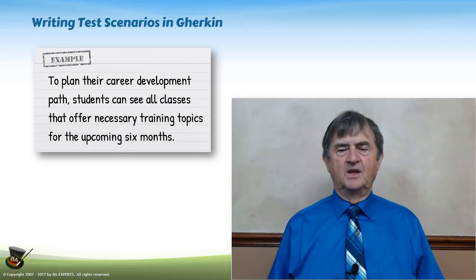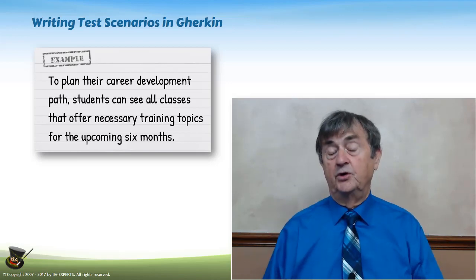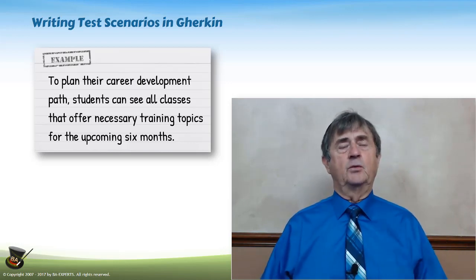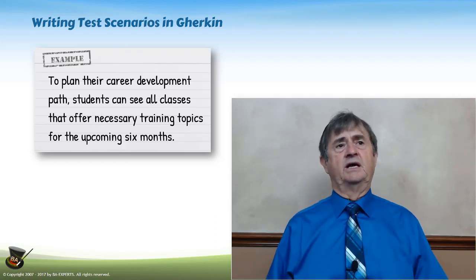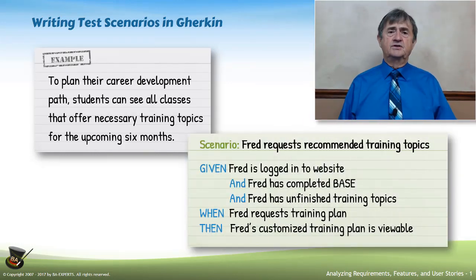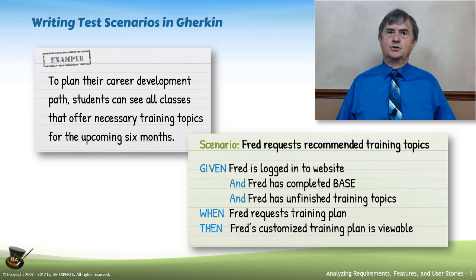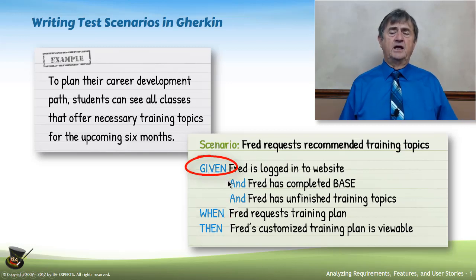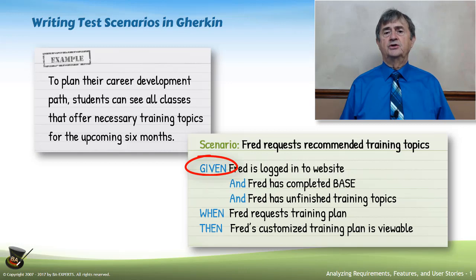Now if that's a user story, we need to get test scenarios — and remember, we're doing this before developers write the application. If I look at that and start to think about what scenarios I'd have to set up in order to test this, the very obvious one is: I have a student who's going to request the recommended training topics. That's the whole purpose of this user story. The format of Gherkin — the structure — is called Given When Then. The Given is basically anything you have to establish and set up in order for the test scenario to have validity and deliver the results you need.